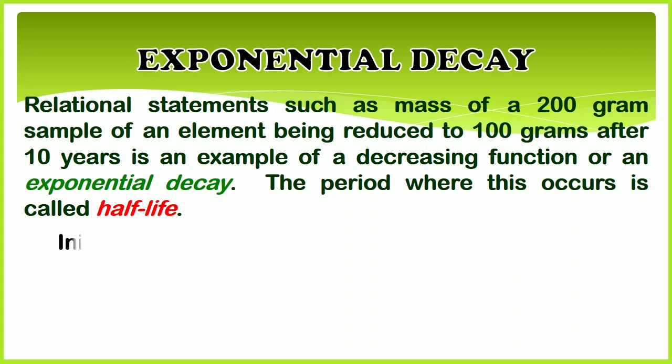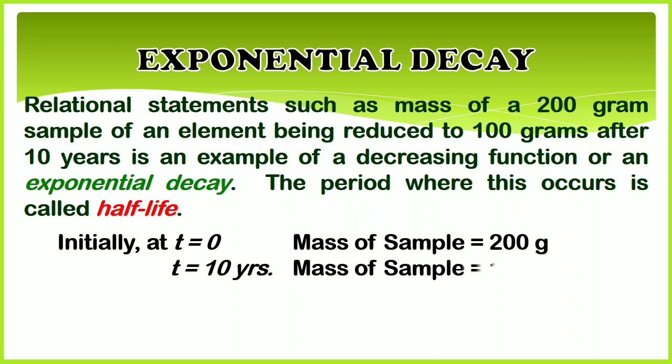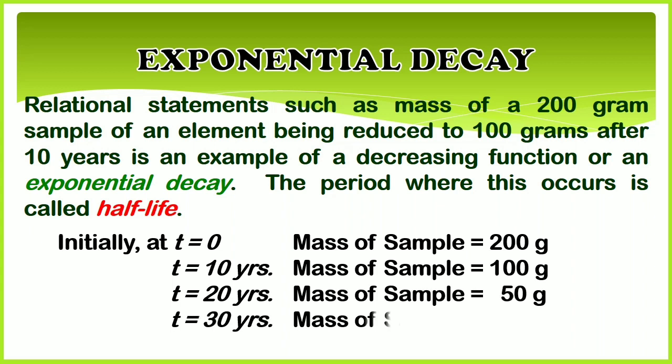Initially, at t = 0, the mass of sample is 200 grams. If t = 10 years, the mass of sample is 100 grams. If t = 20 years, the mass of sample is 50 grams, and if t = 30 years, the mass of sample is 25 grams.